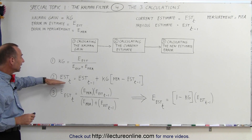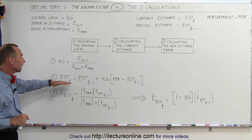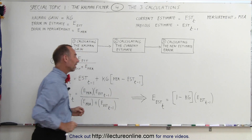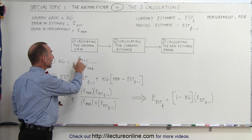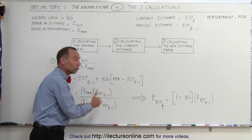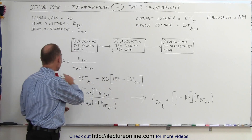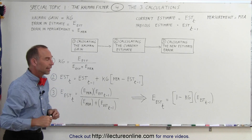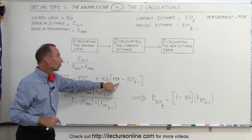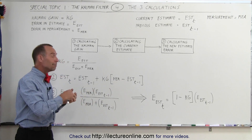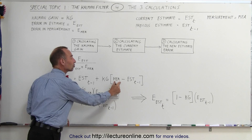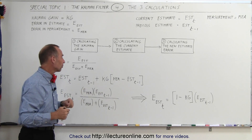In the second equation, the current estimate is equal to the previous estimate plus the Kalman gain times the difference between the measured value and the previous estimate. If the Kalman gain is large, the error in the estimate is large compared to the error in the measurement, so we want to take a lot of this difference into consideration — the measurement is fairly accurate, so we adjust the estimate by taking most of that difference. However, if the Kalman gain is small, meaning the error in the measurement is large, we just want to take a small portion of this difference; otherwise the measurement will throw us off. We just want a small adjustment because we can't trust the measurement that well — there's a large uncertainty in the measurement when the Kalman gain is small.